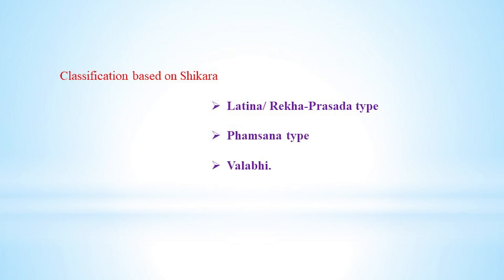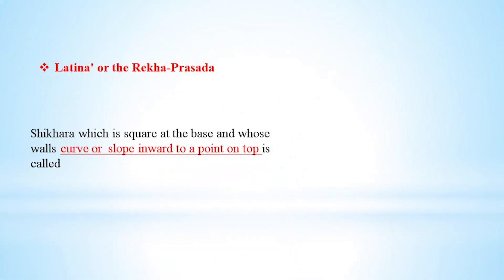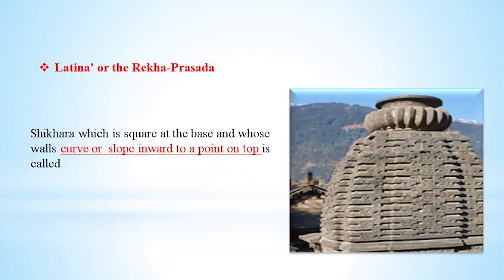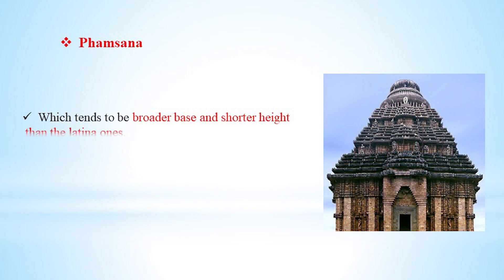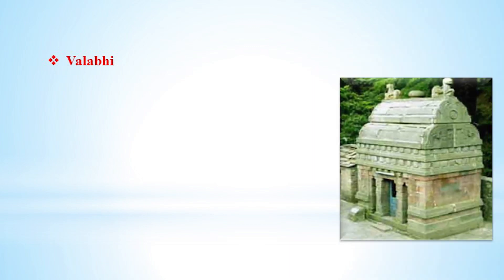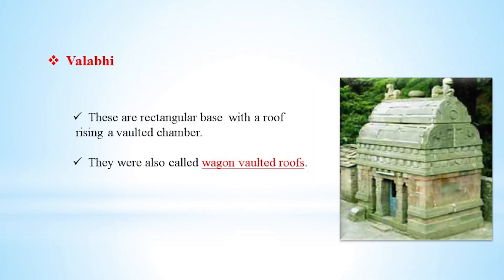The first Shikara type is Latina or Rekha Prasada. The second is Pamsana, which tends to have a broader base and shorter height than the Latina, with slopes rising upward on a straight line. The third type is Vallabi, in which the Shikara base is rectangular with a roof rising as a vaulted chamber, also called Wagon Vaulted Roofs.